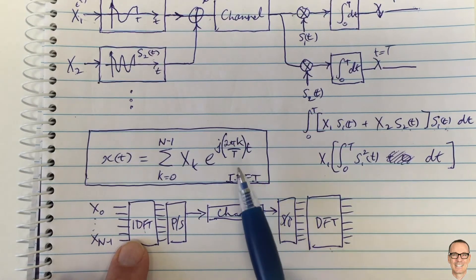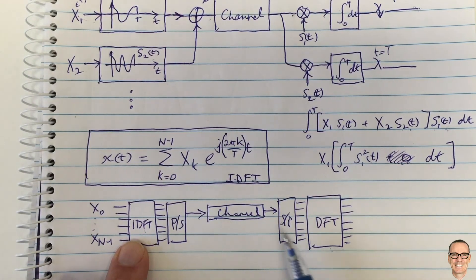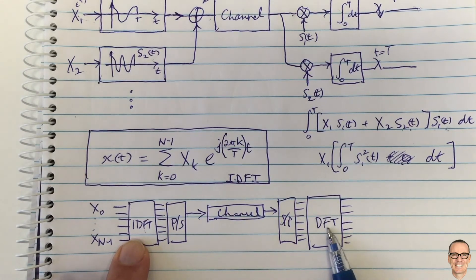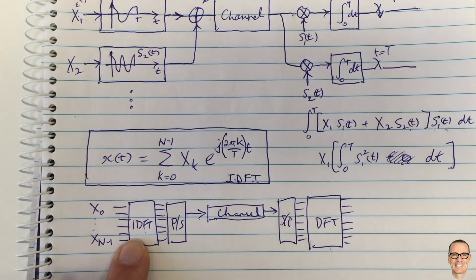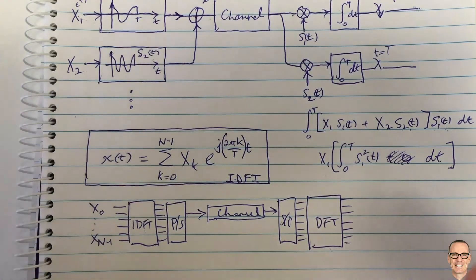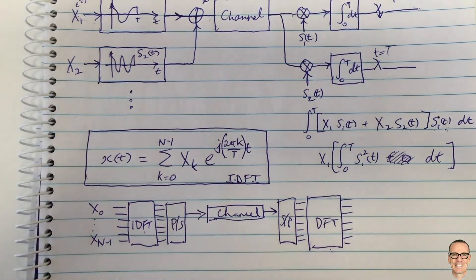But you're able to implement it in digital form very, very efficiently with a DFT and an IDFT digital electronics. That's the double power of OFDM.